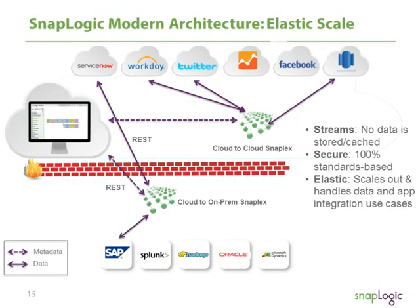Let me walk through the architecture at a high level so you understand what runs where with SnapLogic. We've followed principles of software-defined architecture, with a control plane and a data plane. The control plane runs on AWS as a multi-tenant, metadata-based service with an HTML5-based interface you can log into anywhere. That's where you do your design, scheduling, managing, and monitoring of what we call pipelines — which are data and application process flows.